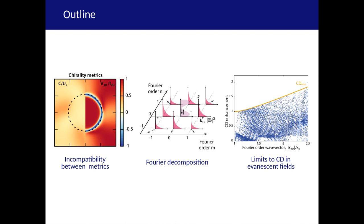First, that the chirality metrics for different applications are not only distinct, but in fact incompatible in the near field. Then I will present how a Fourier decomposition of the near field into evanescent orders gives us a lot of insight into chirality. And based on this, finally, I will show an analytic limit for CD, which is maximized in highly evanescent Fourier orders.